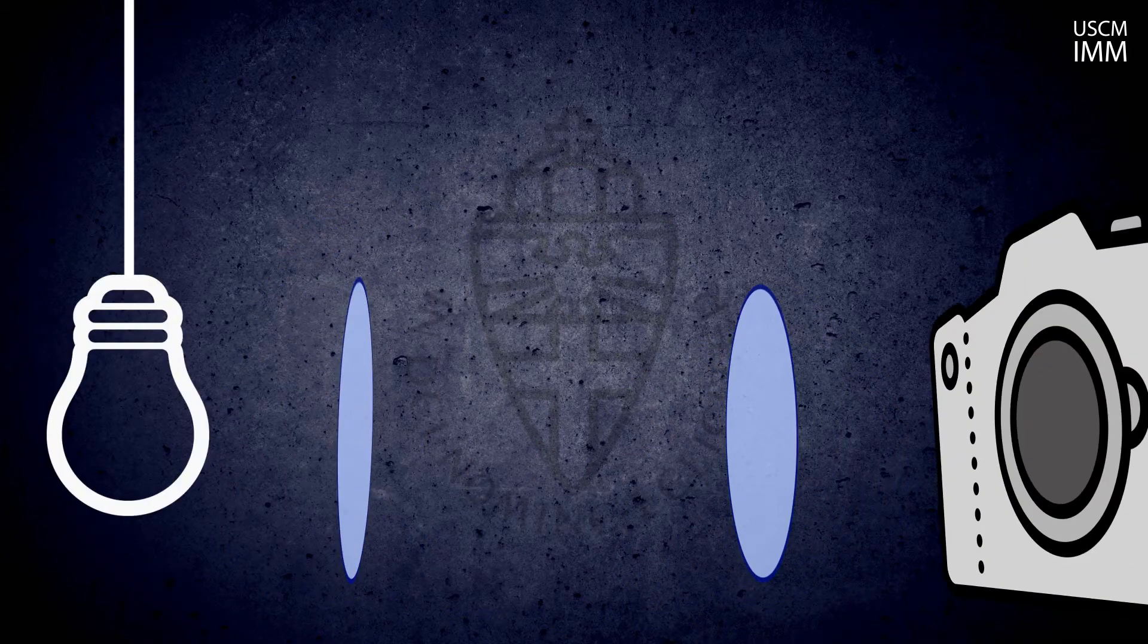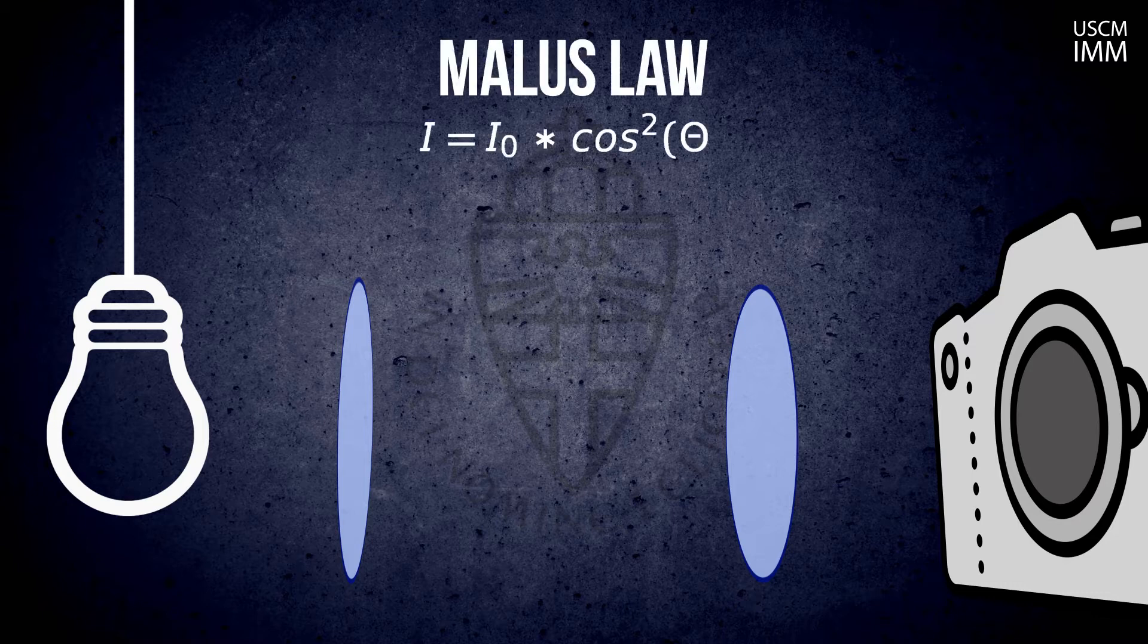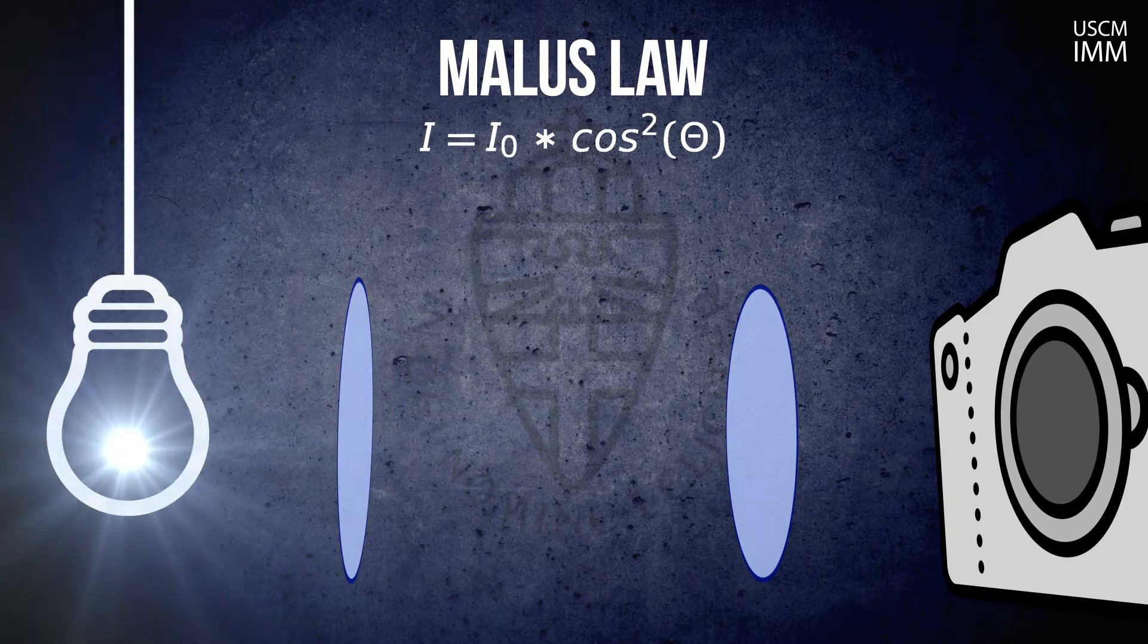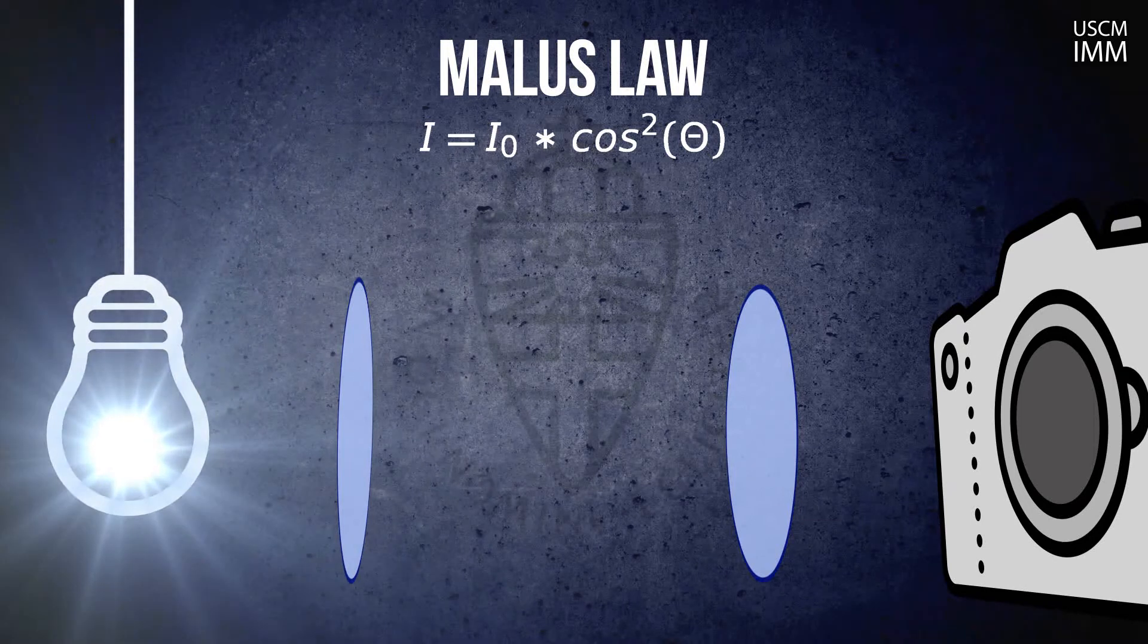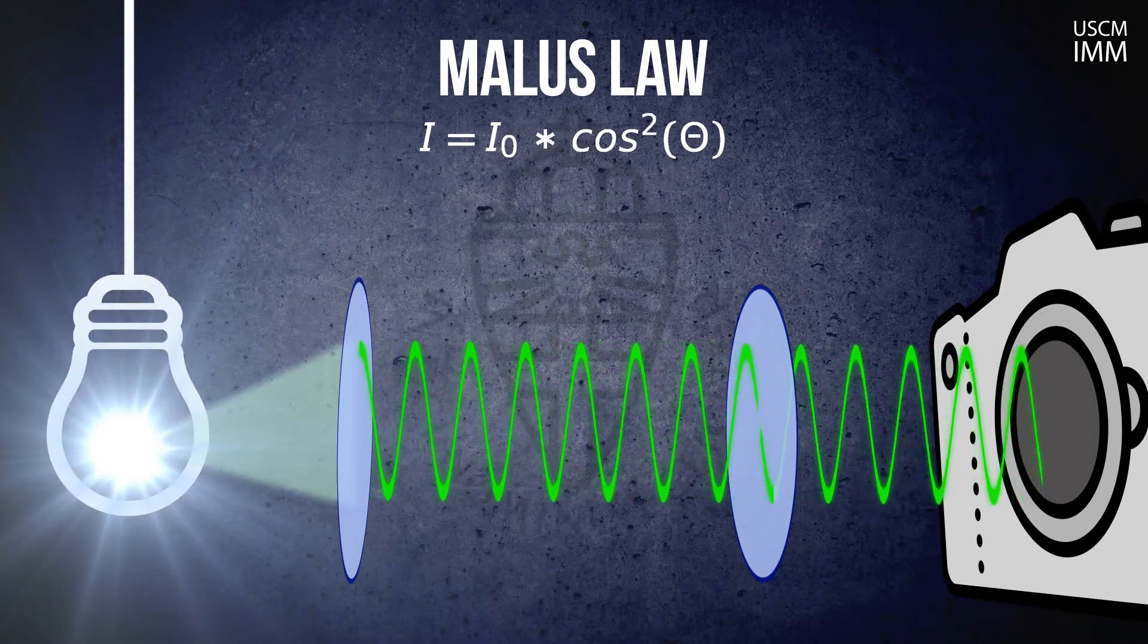Let's take two polarizers, a source of light, and a camera as a detector of light. According to the Malus's law, the intensity of light that passes through these two polarizers will change upon the rotation of one of these polarizers around its axis.